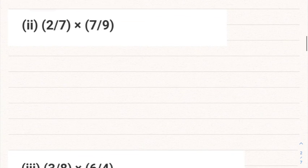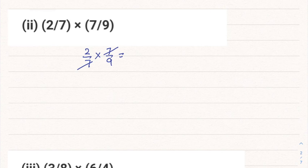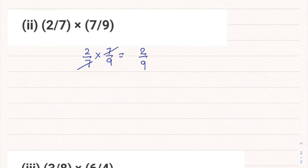Second part: 2/7 into 7/9. Here we can cancel the 7 in the numerator and denominator — they are in the same table so we divide and cancel. The answer is 2/9. This is a proper fraction, and since 2 and 9 are not in the same table, we cannot simplify further. The answer is 2/9.